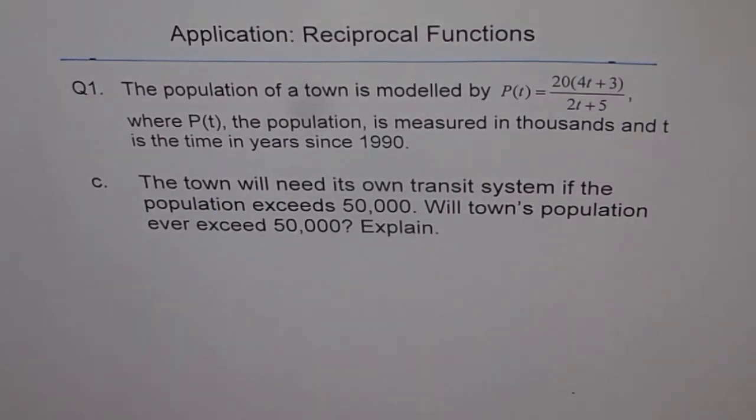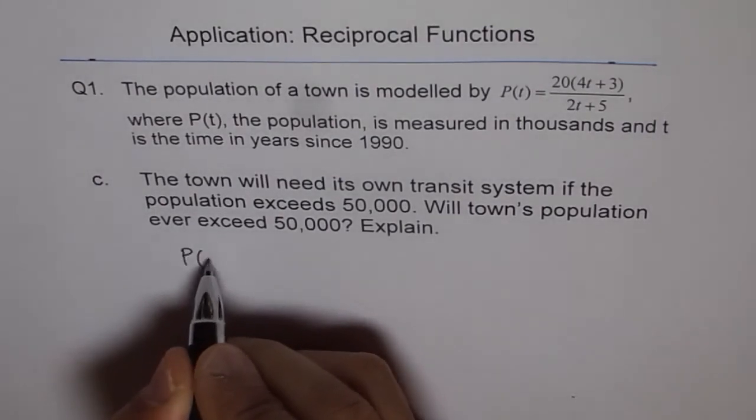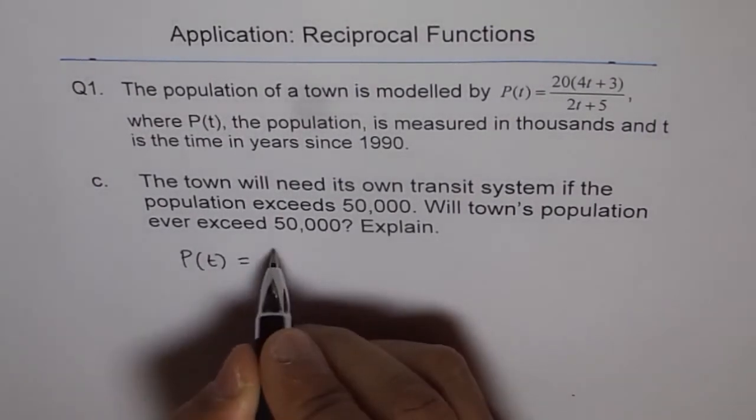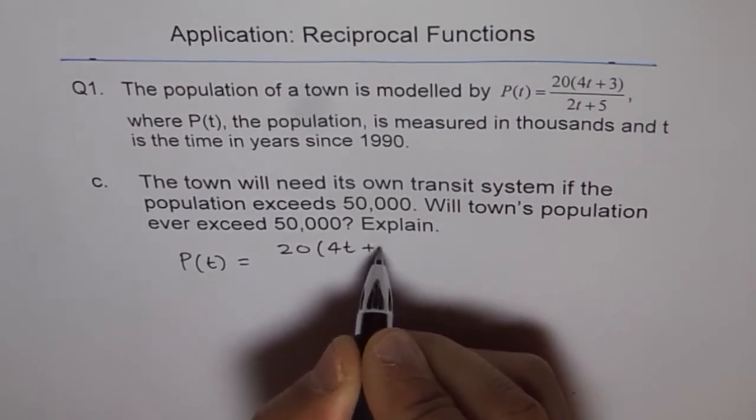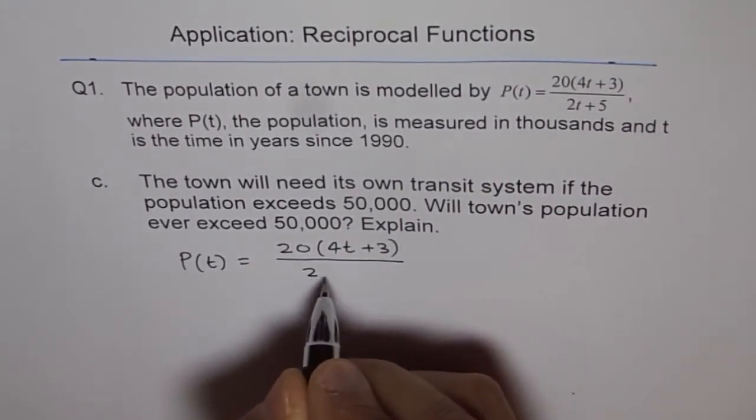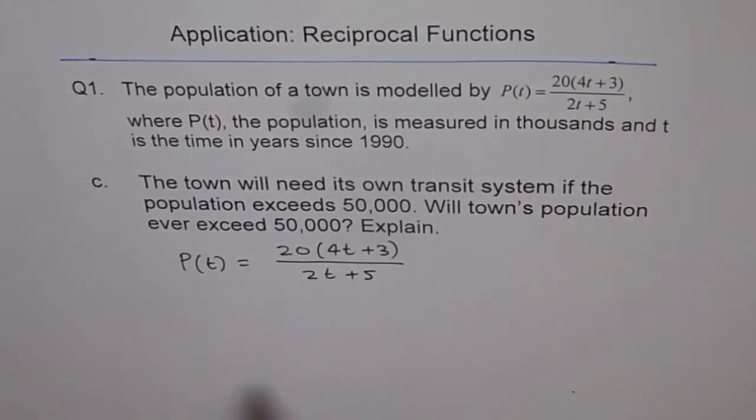This is part C and we have already answered A and B in the previous two videos. Now, how to figure out what is the maximum population possible? The formula given to us for the population of this town is P(t) equals 20 times (4t plus 3) over (2t plus 5).